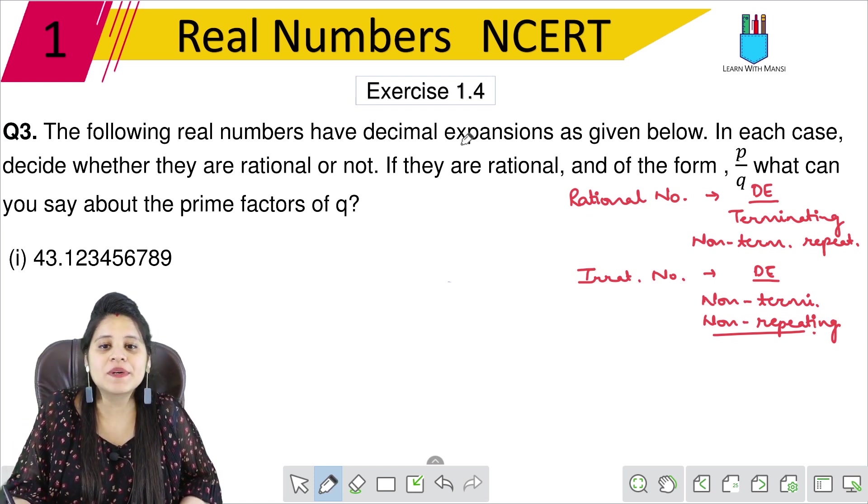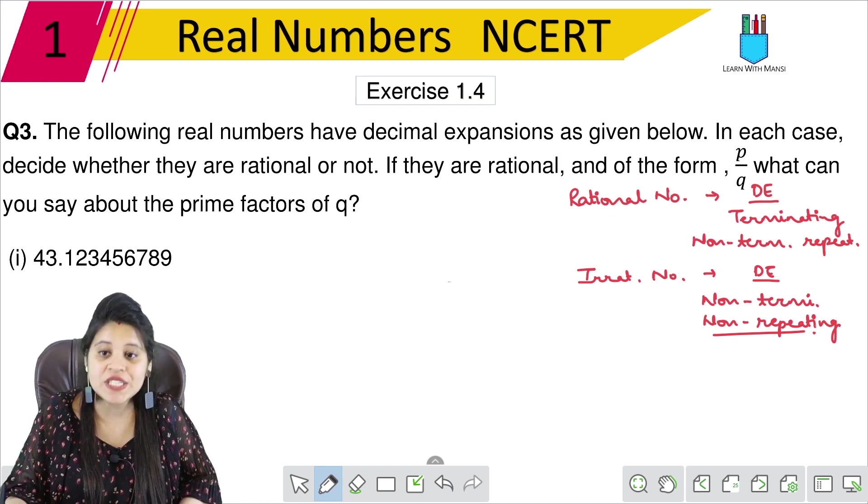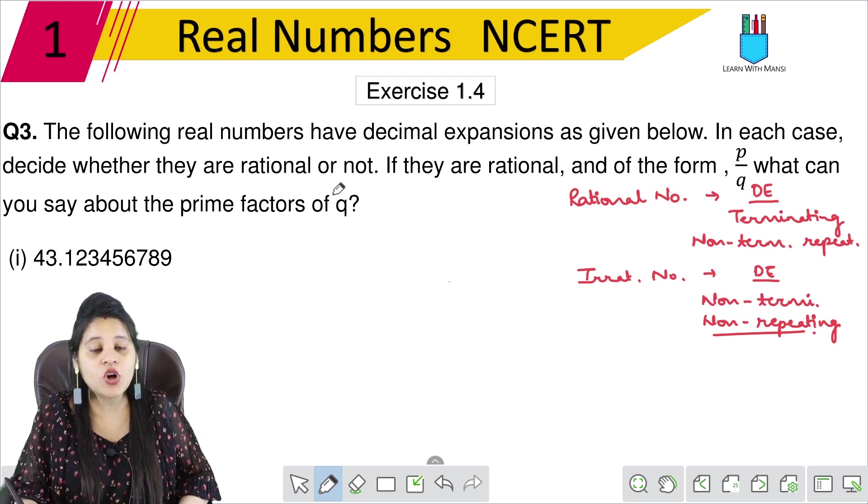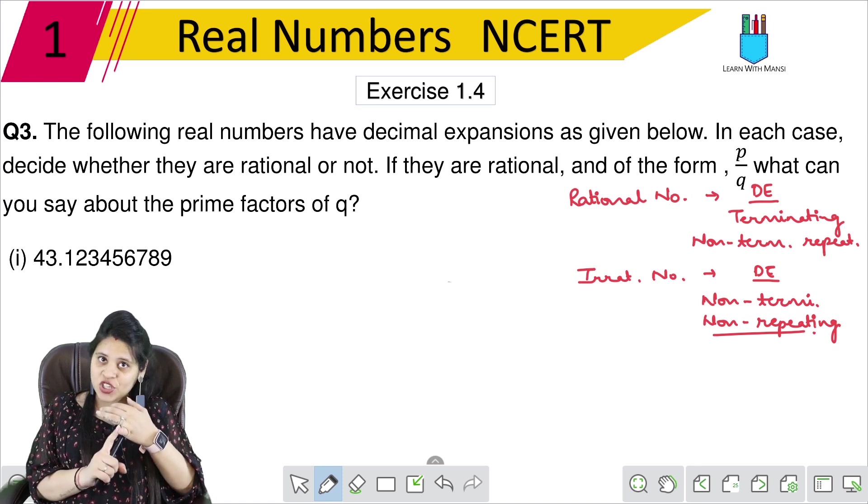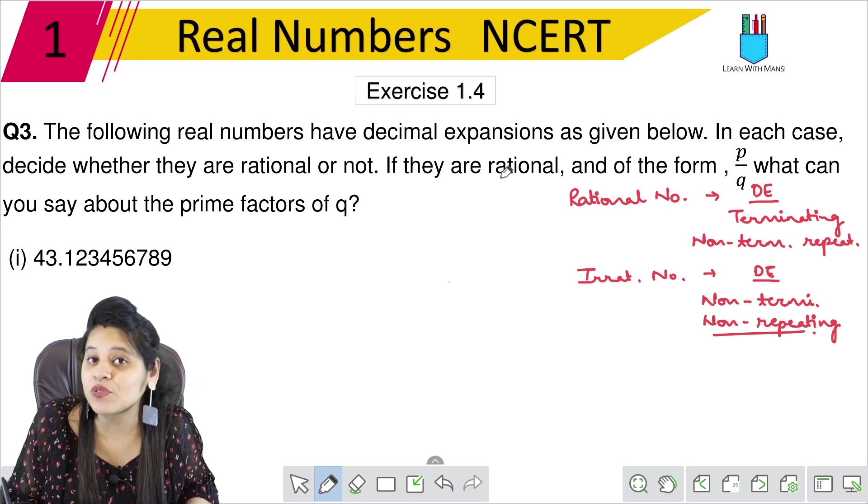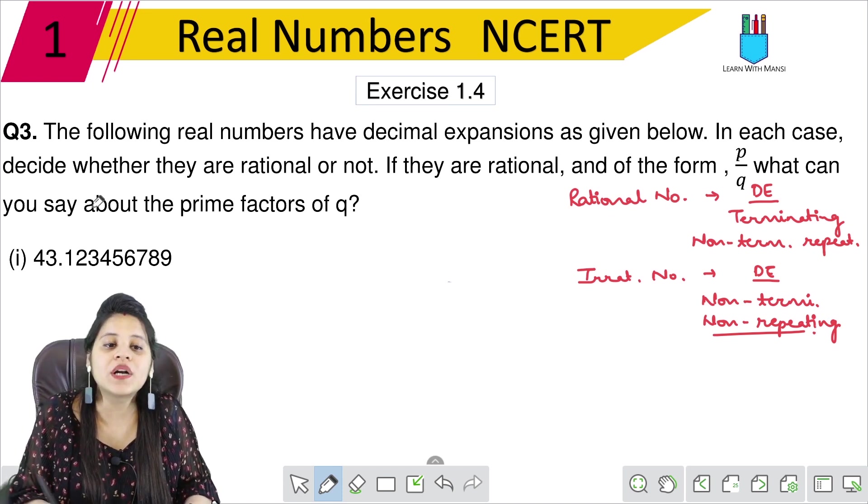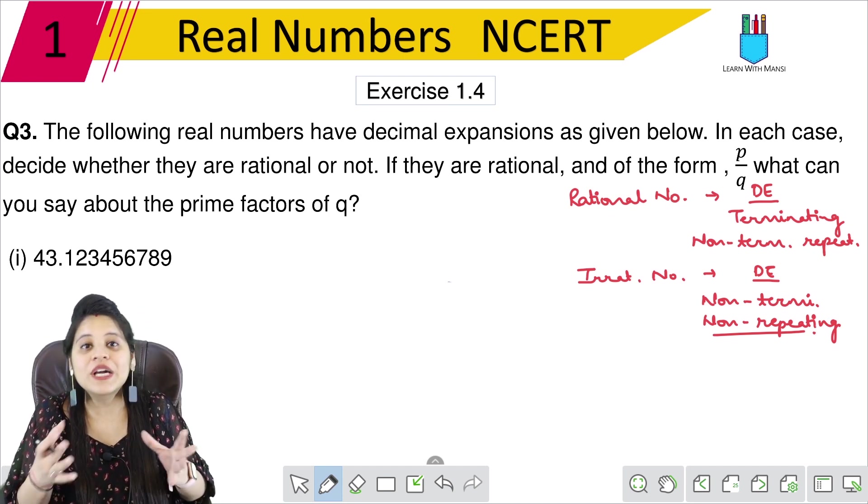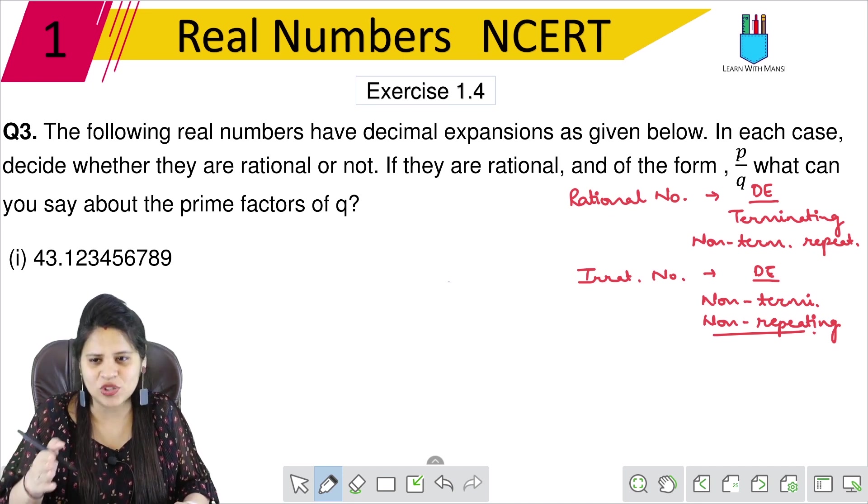The following real numbers have decimal expansion as given below. In each case, decide whether they are rational or not. Also, if they are rational and of the form P upon Q, what can you say about the prime factors of Q? So Q is the denominator.